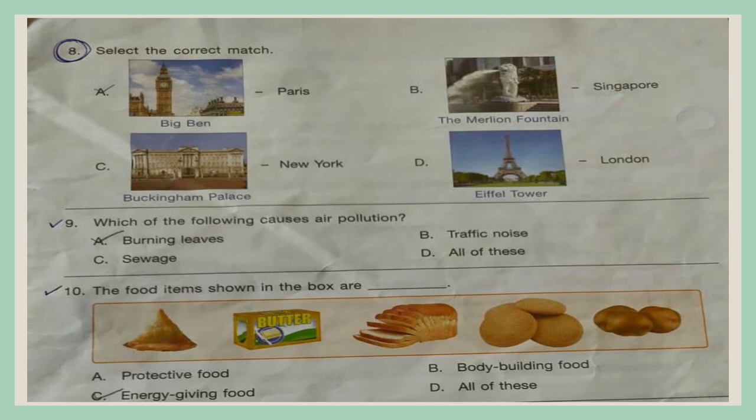Question 9. Which of the following causes air pollution? A. Burning leaves, B. Traffic noise, C. Sewage, D. All of these.